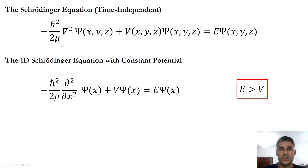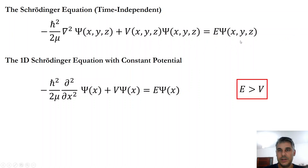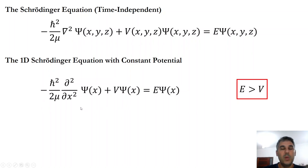Today we are going to see how to solve the Schrödinger equation, which is this equation here, for the case of a particle moving inside a box in one dimension where the walls have an infinite potential.